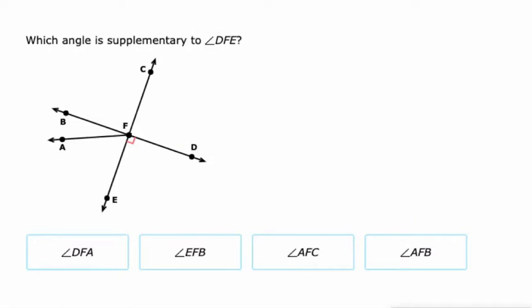And supplementary means two angles that add up to 180 degrees. So they make a line if you put them adjacent to each other. So DFE is this angle that's marked as a 90 degree angle. So any other 90 degree angle would work. What about DFA? DFA. That's more than 90 degrees. EFB. EFB. That's a 90 degree angle, right?